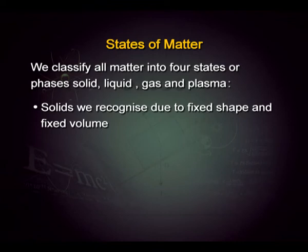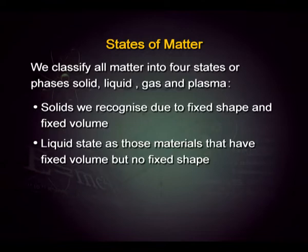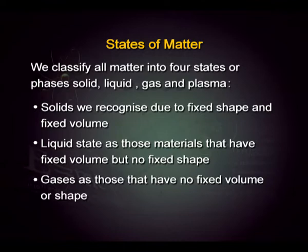Solids are those that we see around us at room temperature, which have a fixed shape and a fixed volume. Liquids, on the other hand, have no fixed shape but have a fixed volume. Gases have no fixed shape and no fixed volume — they occupy the same volume as the container.